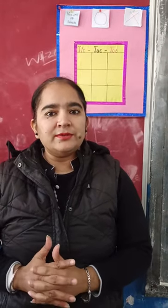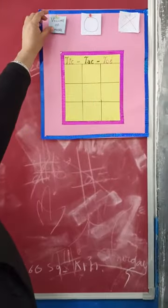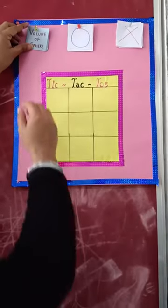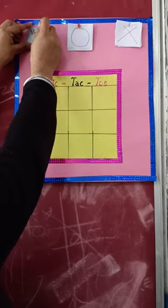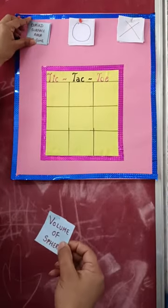All of you will give the right answer and win the game. Just like I have put some formulas, some questions here. Anyone who will answer the formula of volume of sphere, that is 4 upon 3 pi r cubed.